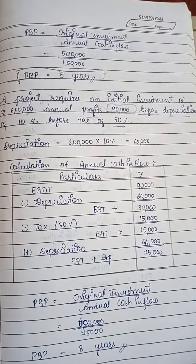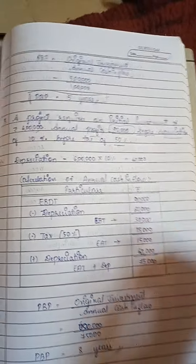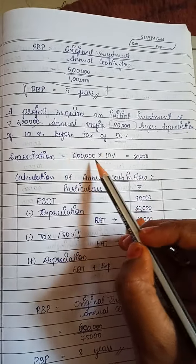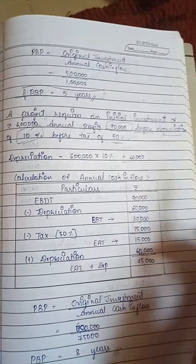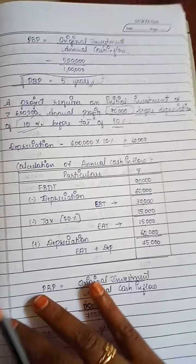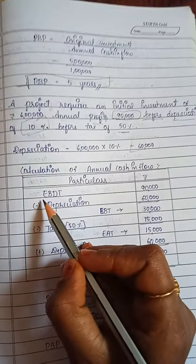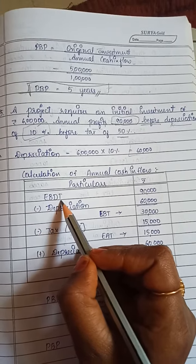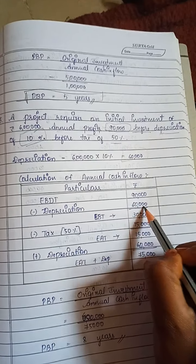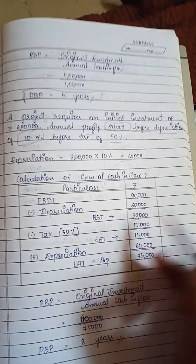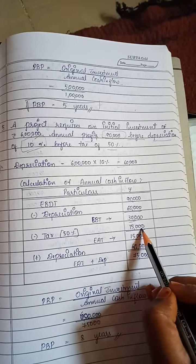Initial investment is 6 lakhs and annual profits given are 90,000. We want the profit that is after tax but before depreciation. Now let us calculate the depreciation: 6 lakhs into 10 percent gives us 60,000 as depreciation. So earnings before depreciation and tax is 90,000 minus depreciation of 60,000, giving us EBT of 30,000.